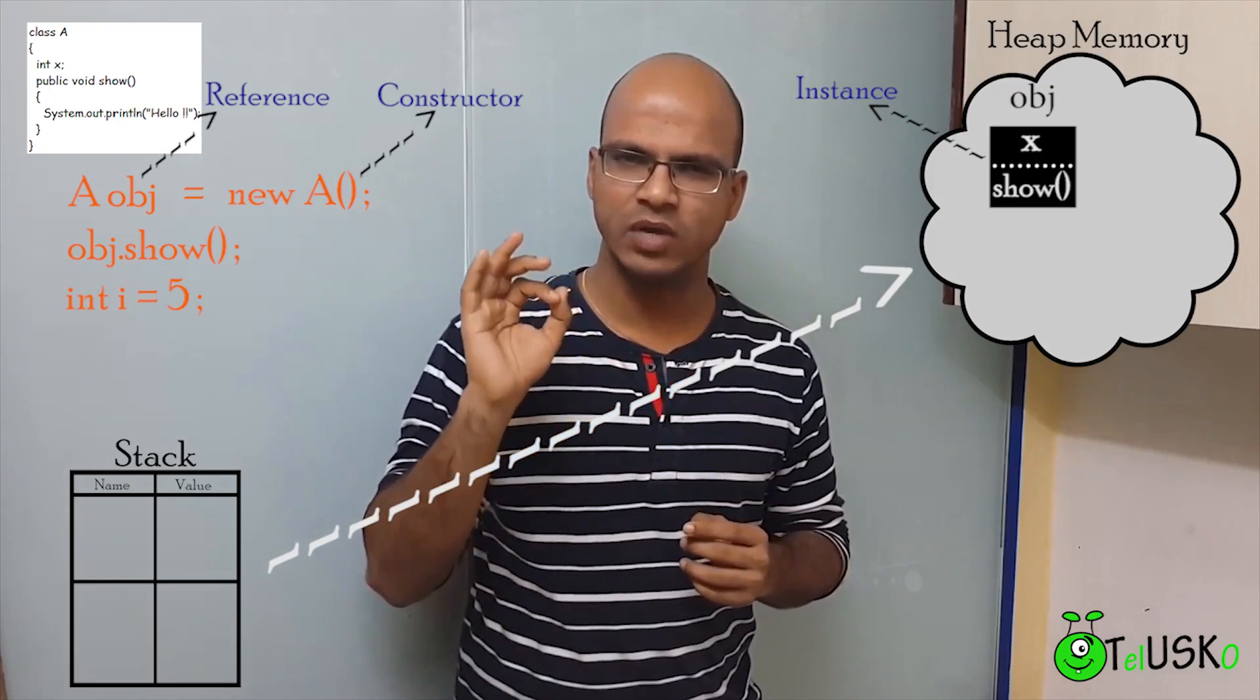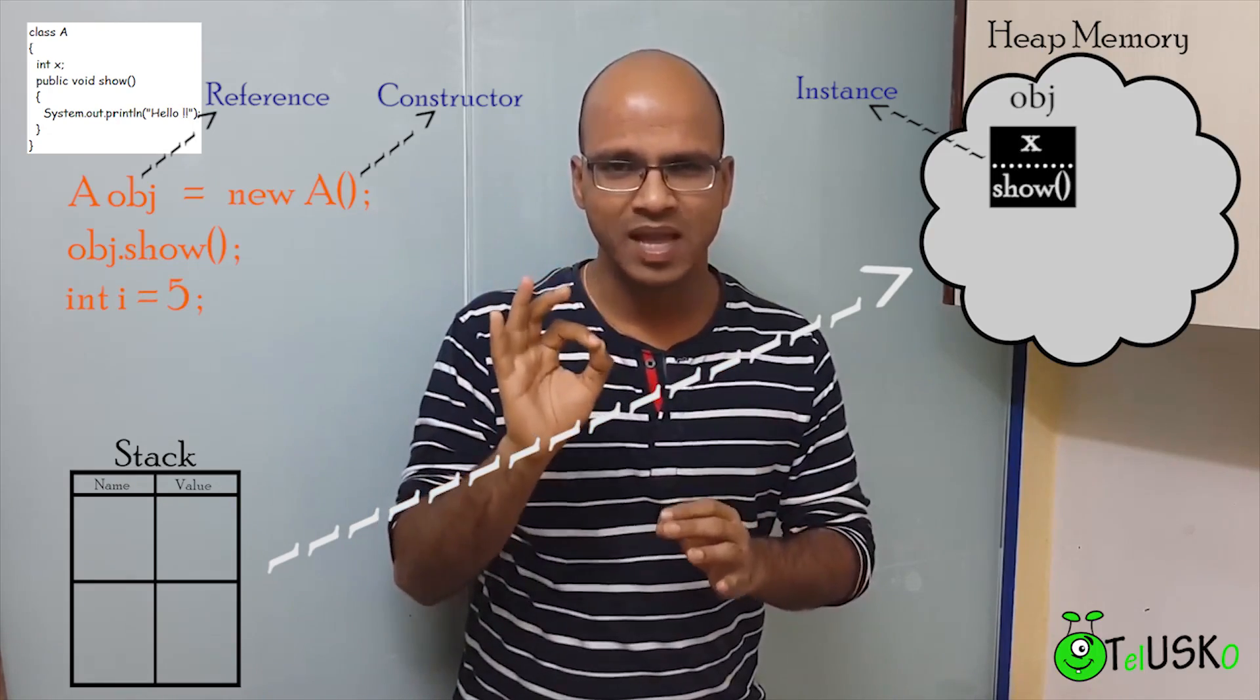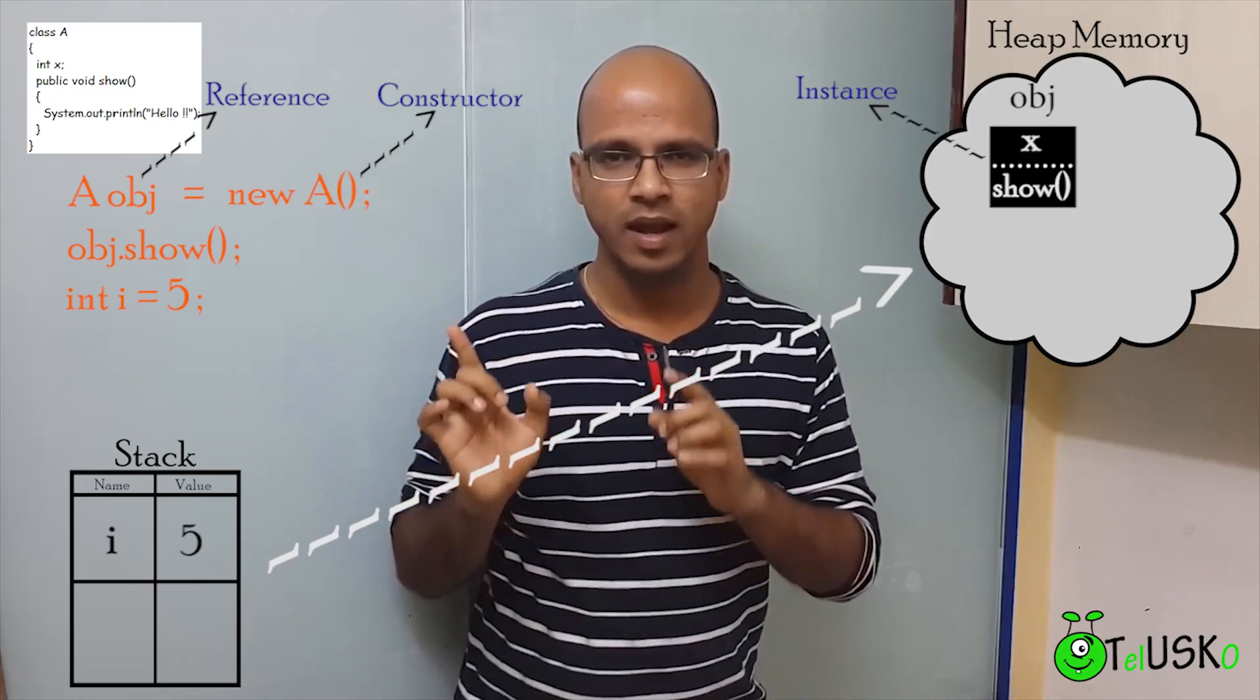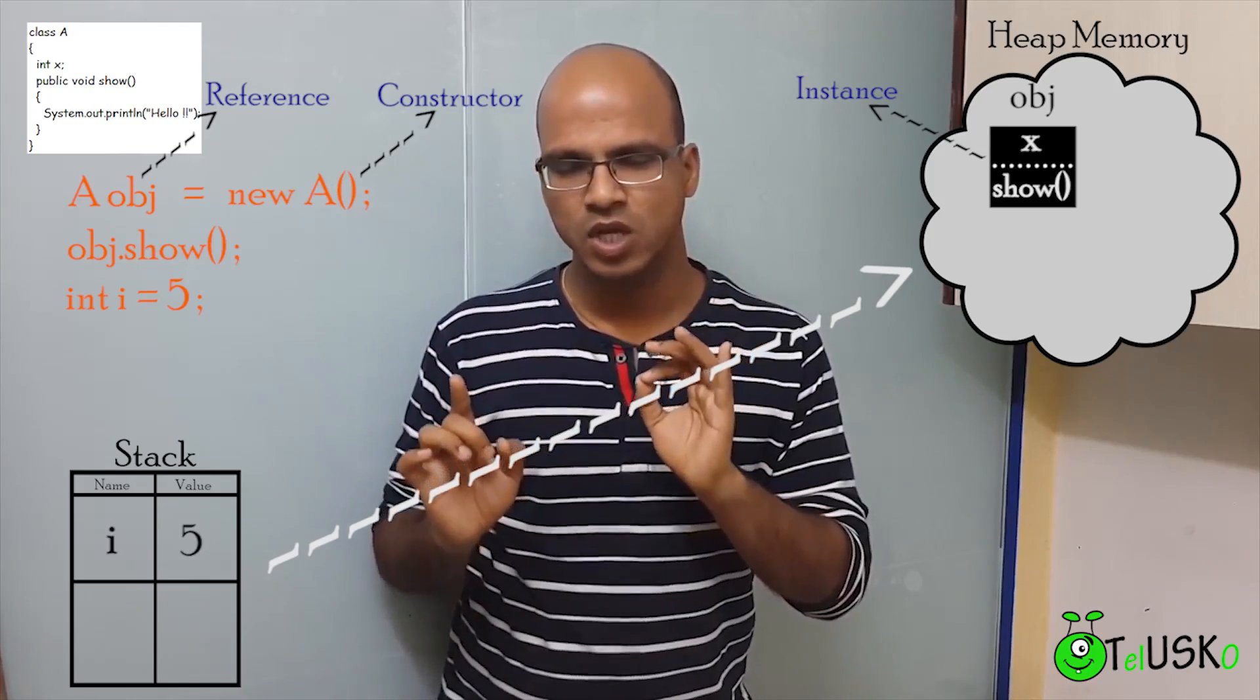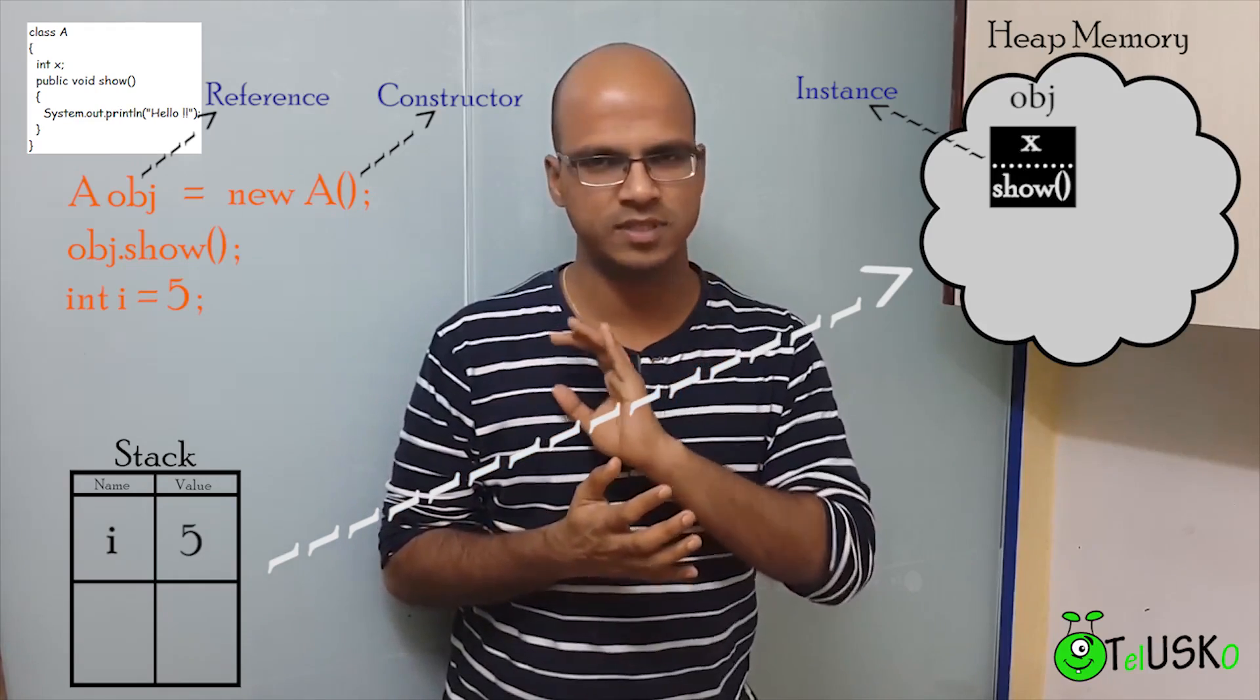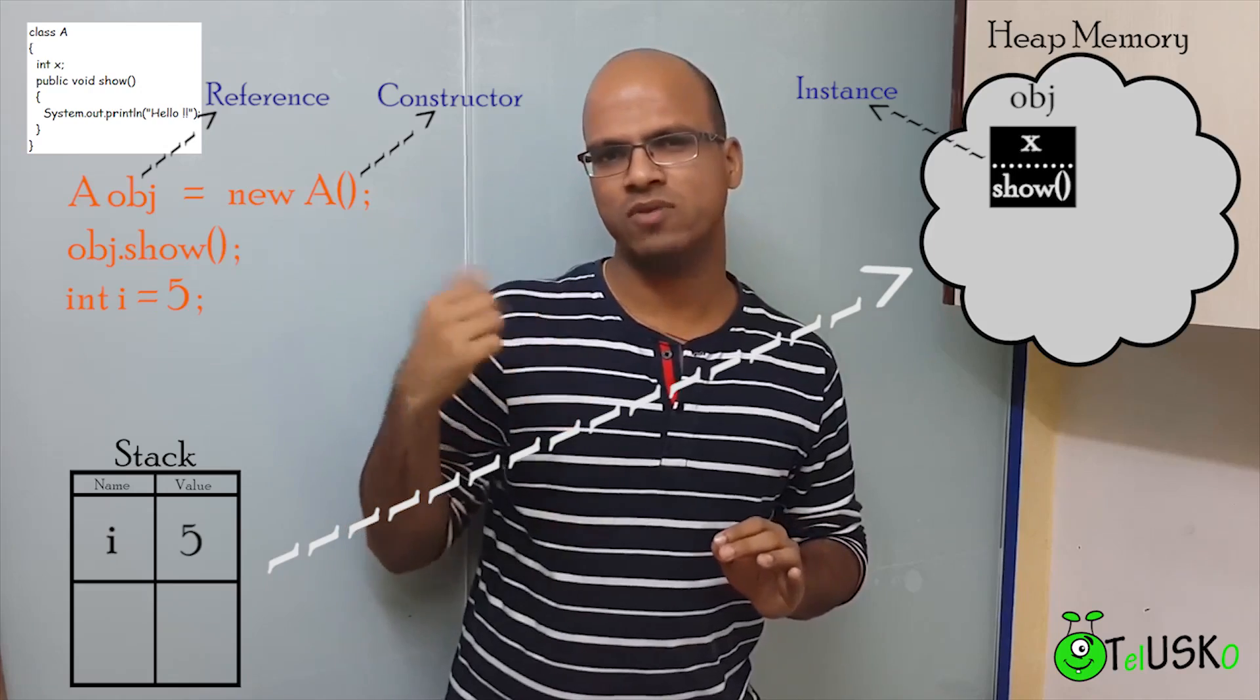Let's take an example. Let's say we have int i equal to 5. So that's a variable. They're simple variables. Now this variable i will be created inside stack memory. So we have a stack. In stack we have i. And in the second column, we have to mention the value, which is 5. So whenever I want to access the value of i, I will simply fetch the value from the stack memory and the value is 5.